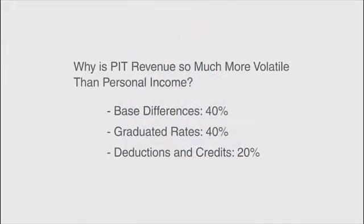We estimate that about 40 percent of the additional volatility came from differences between personal income and the income tax base. Another 40 percent came from the state's graduated rate structure, and the final 20 percent came from deductions and credits.